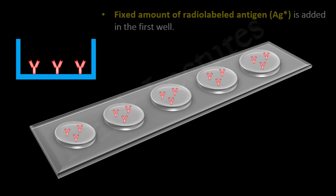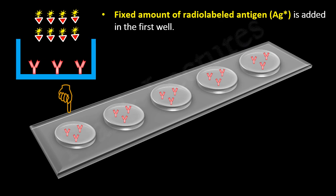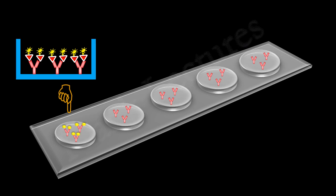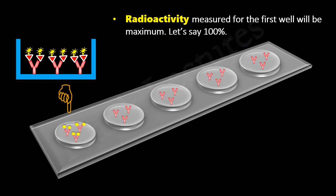First, we take a microtiter plate. To keep this illustration simple, we are showing only five microtiter wells. In each well we will immobilize a fixed amount of antibodies specific to the test antigen — let's say three antibodies are fixed in each microtiter well. Thus, the concentration of antibody is constant in all these wells. We add a fixed amount of radiolabeled antigen to the first well; this amount is enough to saturate all the antigen binding sites. We rinse the well to remove any unbound antigens. If we measure the radioactivity of this well, it will be maximum — let's say 100%. This is our control well.